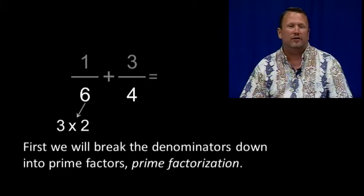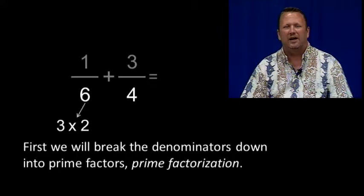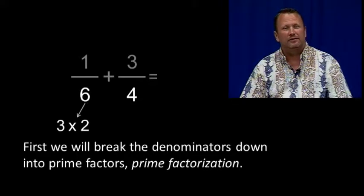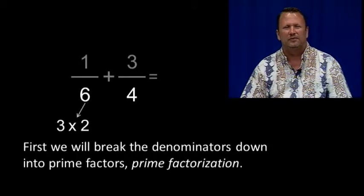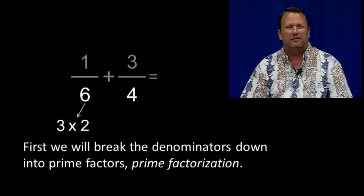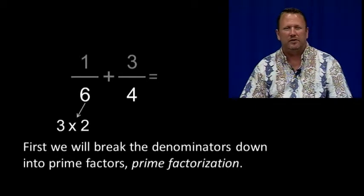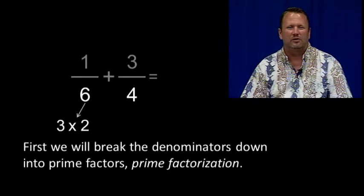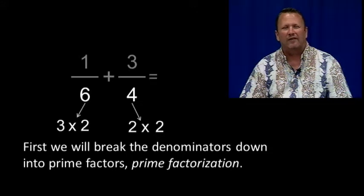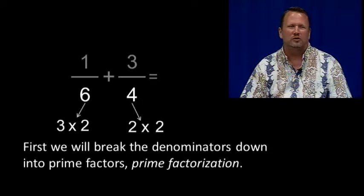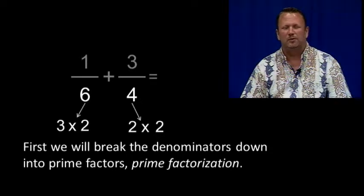First, we will break the denominators down into prime numbers. This is called prime factorization. Here, 6 is equal to 3 times 2. When we break 4 down into its prime factors, we end up with 2 times 2.